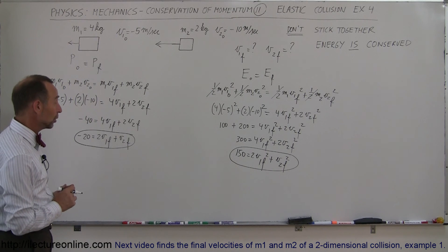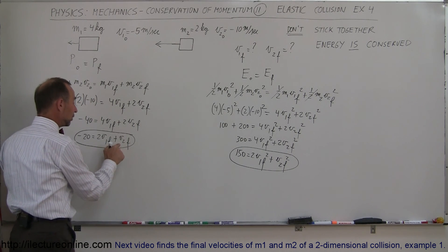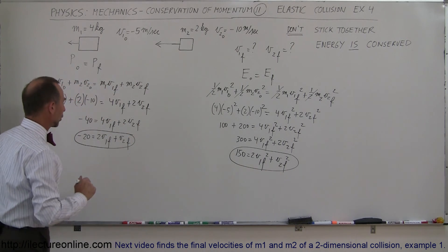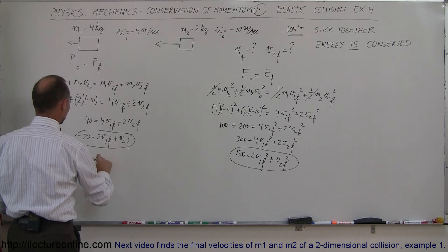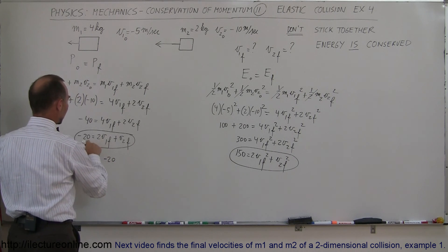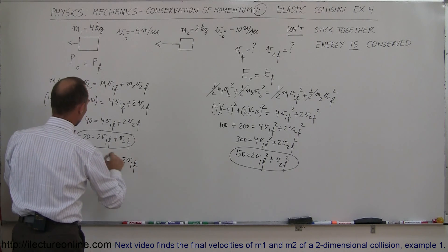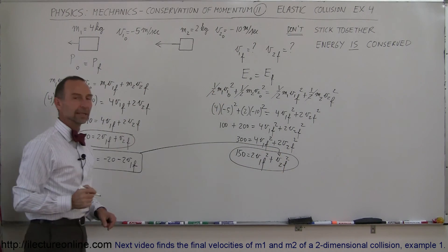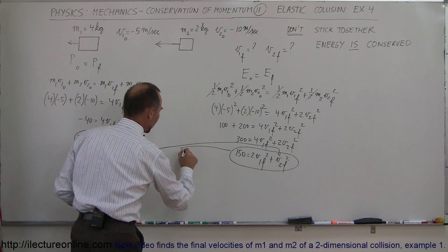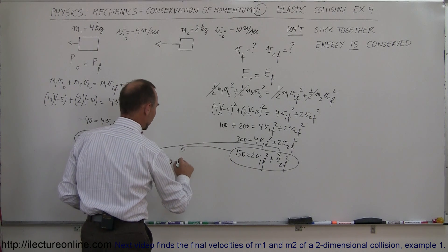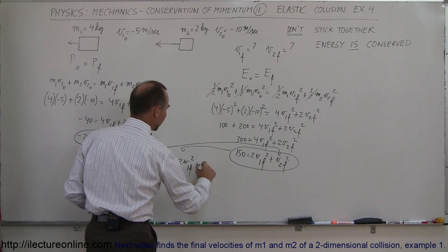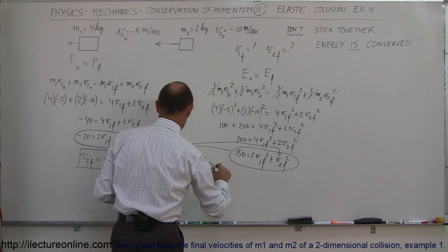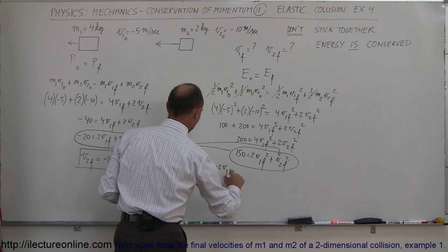Now we have two equations and two unknowns. We're going to take the momentum equation, solve it for v2 final, and substitute that into the energy equation to eliminate it. So v2 final equals minus 20 minus 2 v1 final. We'll take this relationship and plug it into the energy equation, giving us 150 equals 2 v1 final squared plus the quantity minus 20 minus 2 v1 final, all squared.